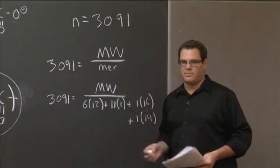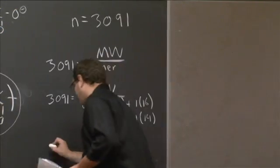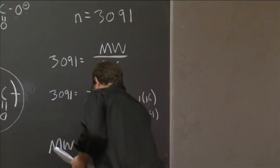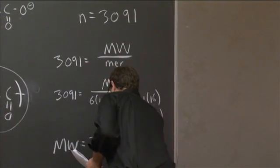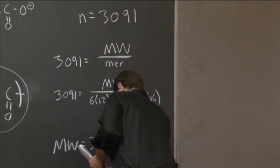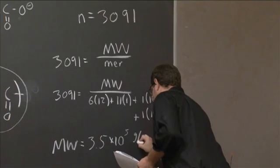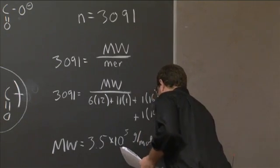So now we can easily just solve for the molecular weight. And we'll find that molecular weight in this problem will be equal to 3.5 times ten to the fifth grams per mole.